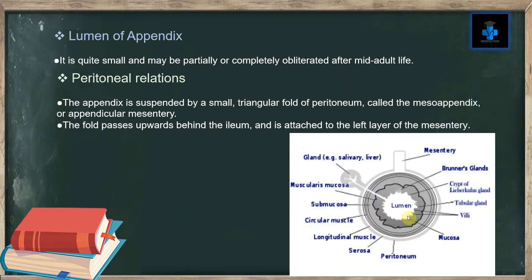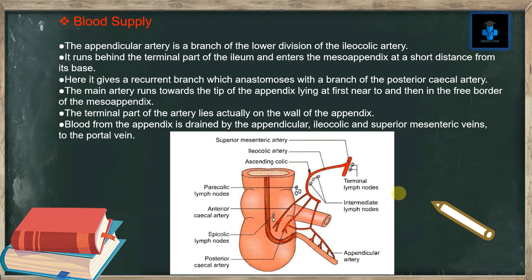Lumen of the appendix: it is quite small and may be partially or completely obliterated after mid-adult life. Peritoneal relations: the appendix is suspended by a small triangular fold of peritoneum called the mesoappendix or appendicular mesentery. This fold passes upward behind the ileum and is attached to the left layer of the mesentery.